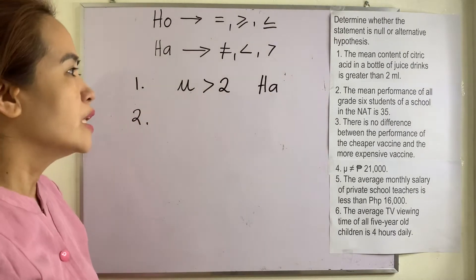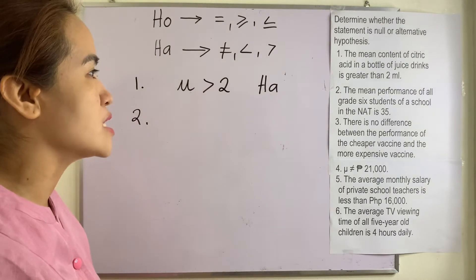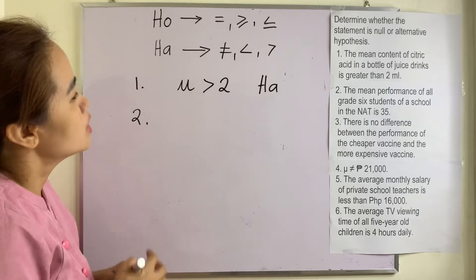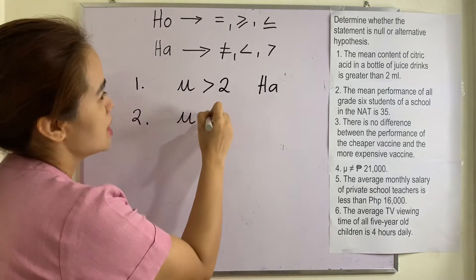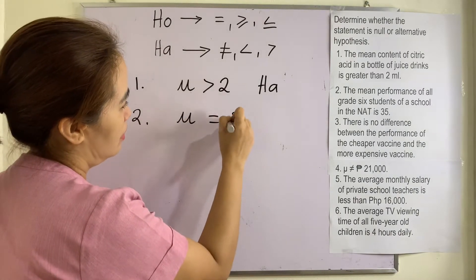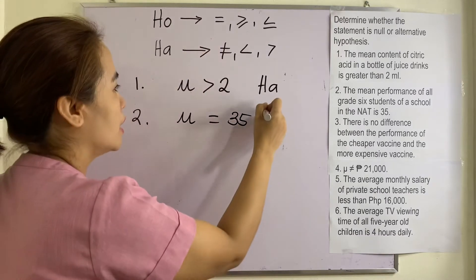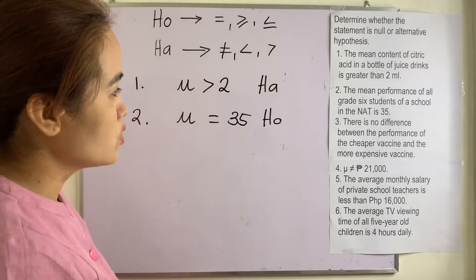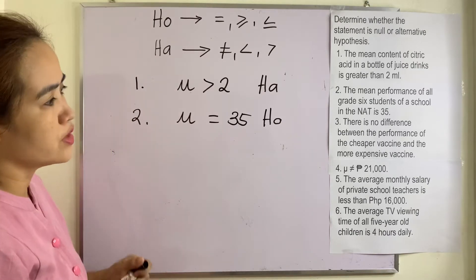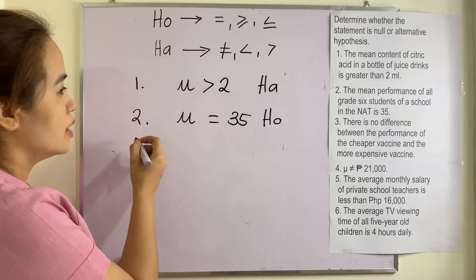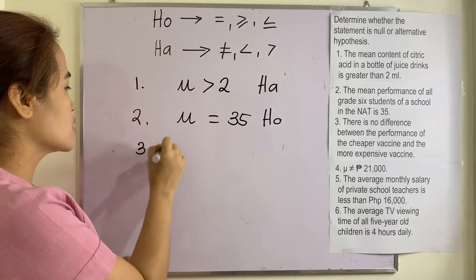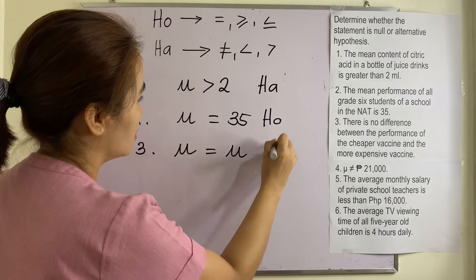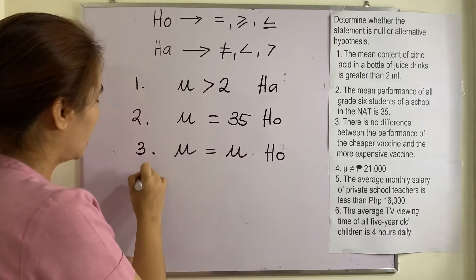Number two: the mean performance of all Grade 6 students of a school in the NAT is 35. This translates to equals 35, therefore this is a null hypothesis. Number three: there is no difference between the performance of the cheaper vaccine and the more expensive vaccine. This translates to equal, so again this is a null hypothesis.